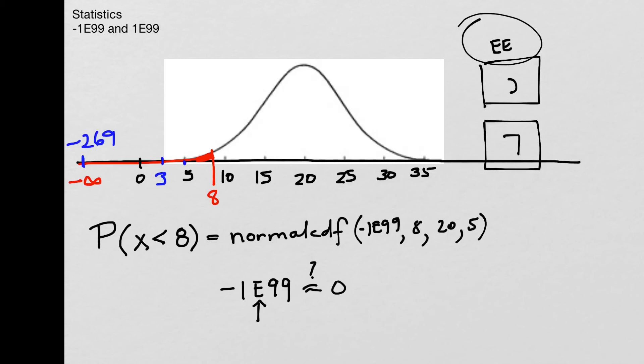So again, please use second and the comma. Second, comma. And that will get you the E because of the EE button. So I wish that made more sense, but that's the way the calculator works.